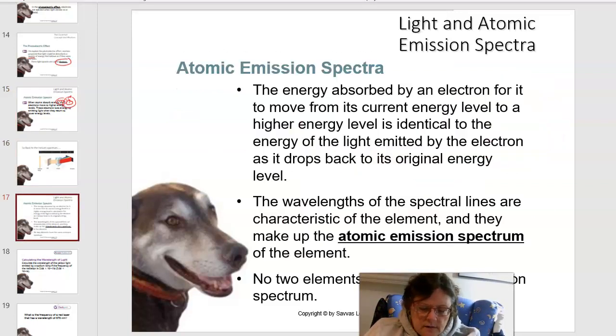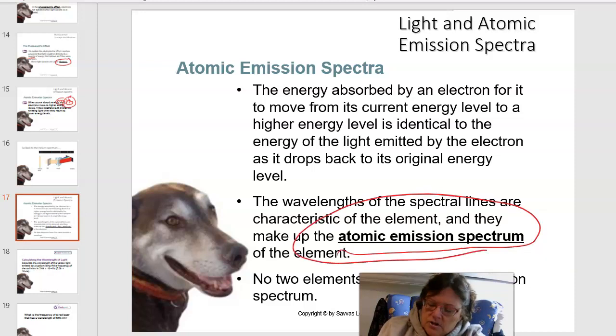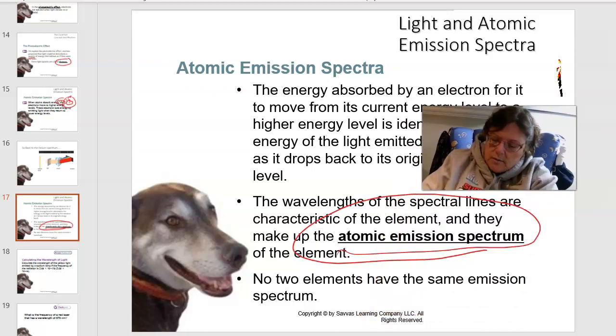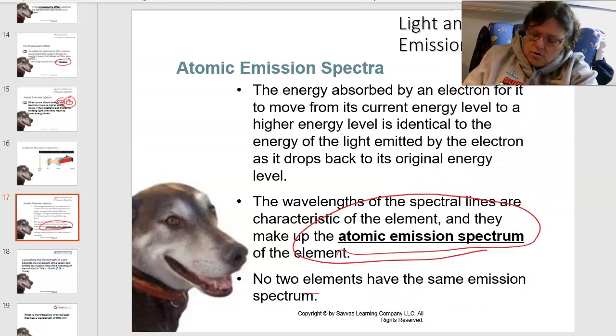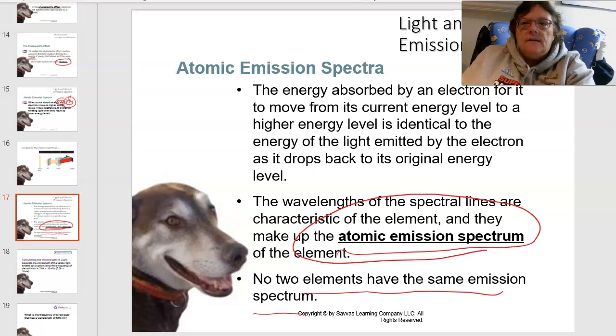So we're back to the helium spectrum. The energy absorbed by the electron to move from its current energy level to a higher level is identical to the energy of the light emitted as it drops back to its original energy level. This is what we call atomic emission spectrum. Each atom has its own spectrum, and no two elements have the same. It's like fingerprints. That is a little bit about electrons and light.